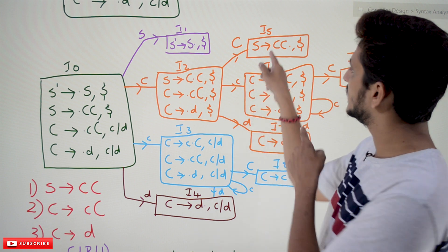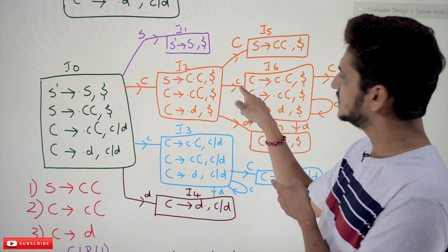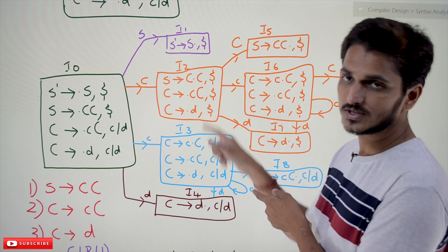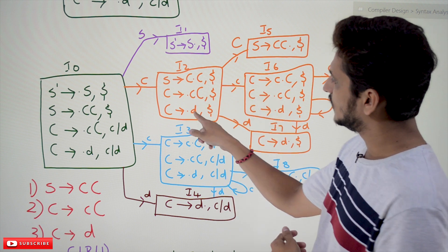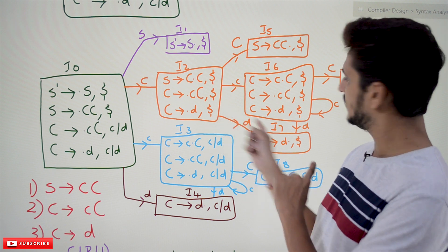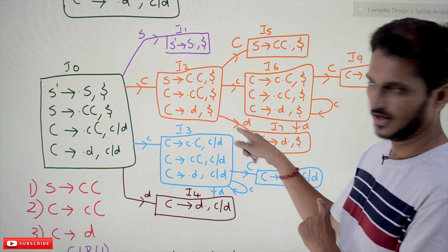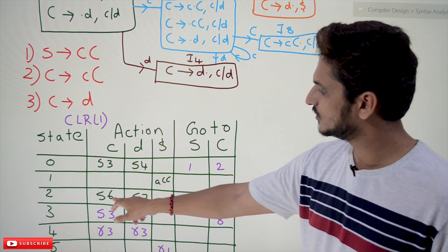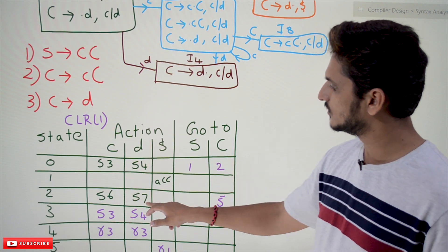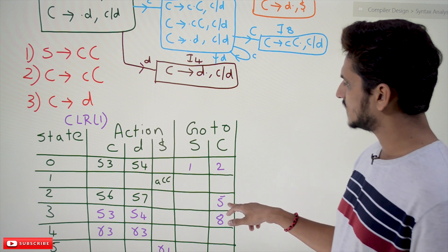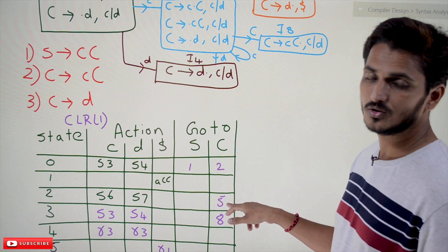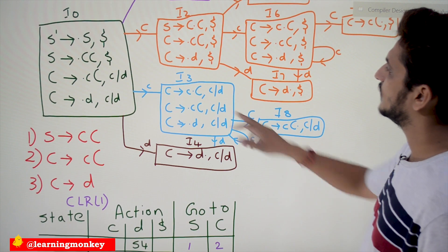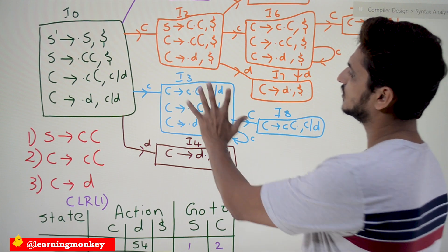Coming to state i2: if you see capital C we are moving to fifth state — write that in Go-To. If you see small c, shift to 6; if you see small d, shift to 7. So for i2: Action is shift to 6 on c, shift to 7 on d; Go-To is fifth state on C.